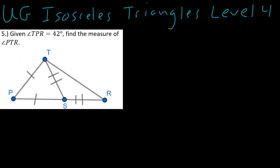Alright, and welcome to the ultimate guide to isosceles triangles, level 4. Now, in problem number 5, we're given kind of this weird shape, and let's really highlight some things.